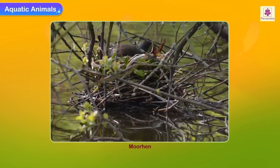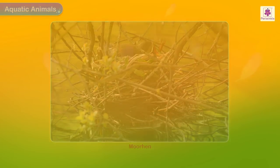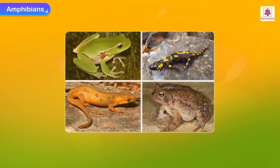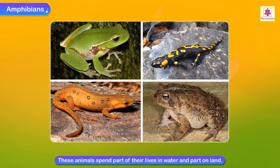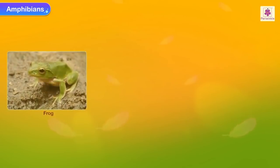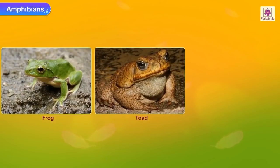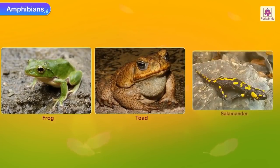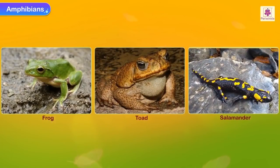They build their nests in the shelter of reeds that grow on the banks. Amphibians are animals that spend part of their lives in water and part on land. Frogs, toads and salamanders are amphibians.